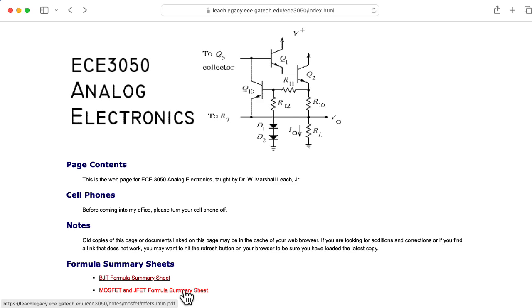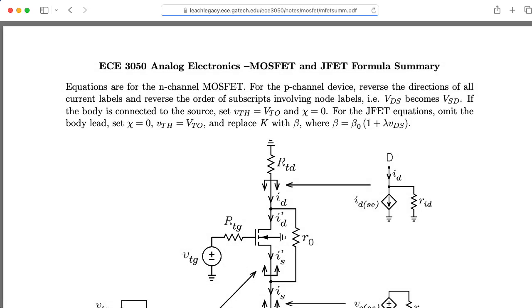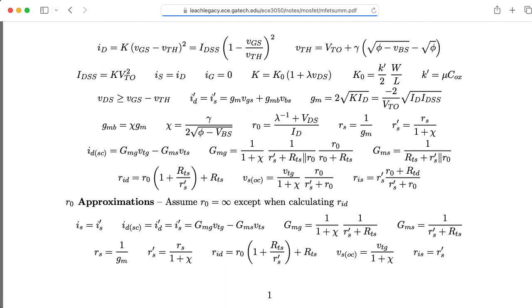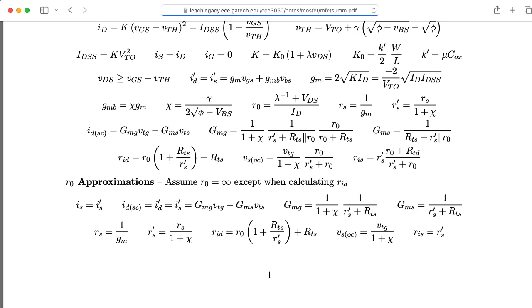Our gain formulas we computed for the JFET will also work for a MOSFET-based source follower if you connect the source to the bulk. And if you don't have the source connected to the bulk, you can make this correction to VTG by dividing it by 1 plus chi. And you can use this RS' instead, which is RS divided by 1 plus chi, where this chi correction factor is something I'll talk about in the future.